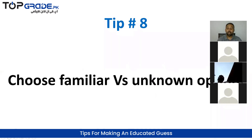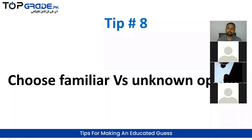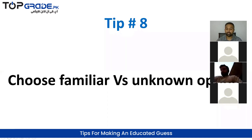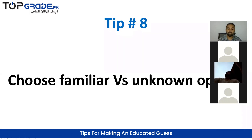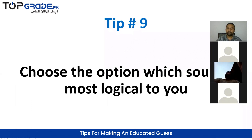Tip number 8: if among four options you recognize three but one is unfamiliar, remember — you can never have a new or unknown correct answer on a familiar topic. So if you have familiar and unknown options, choose from the familiar ones.